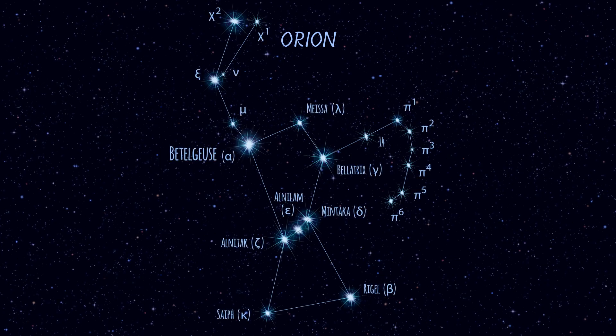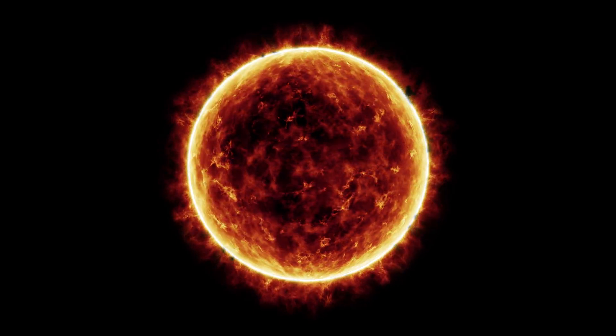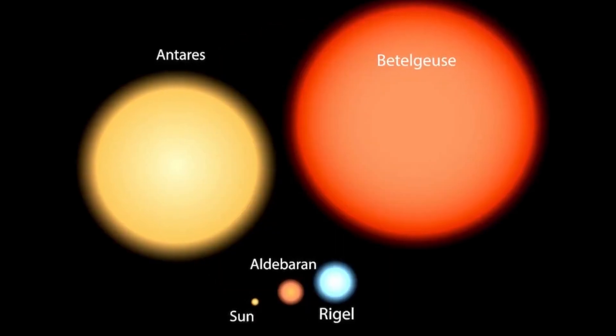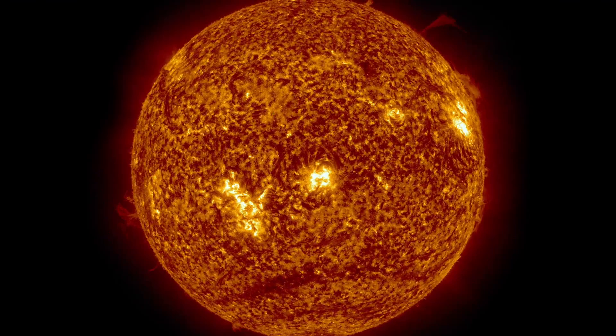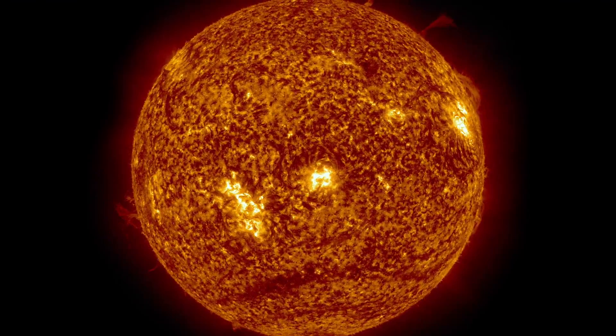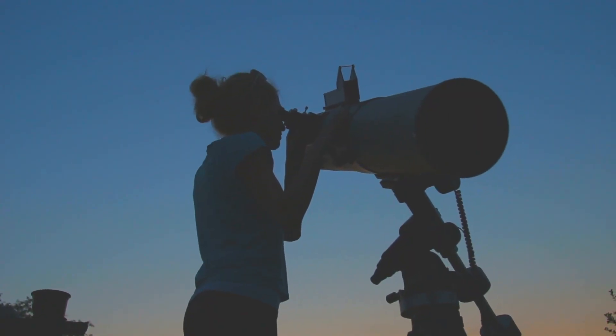Betelgeuse, often called the shoulder of Orion, is no ordinary star. It's a behemoth in the cosmos, boasting a diameter about 1,000 times that of our sun. With its distinctive reddish hue, this red supergiant has been captivating stargazers for centuries. But what sets Betelgeuse apart?